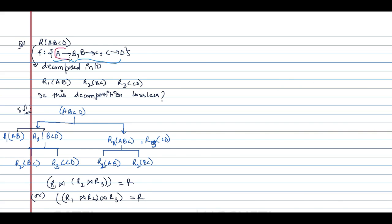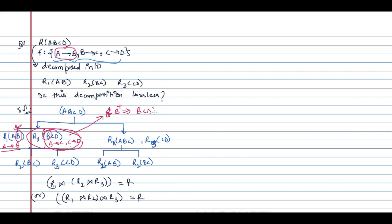If you are breaking the relation where A determines B applies to R1, and B determines C and C determines D are valid for the second table, the common attribute is B. We need to check that B is a key attribute in at least one table. If you compute B-closure, you get B, C, D — all attributes of that table — therefore B is a key attribute in that table.